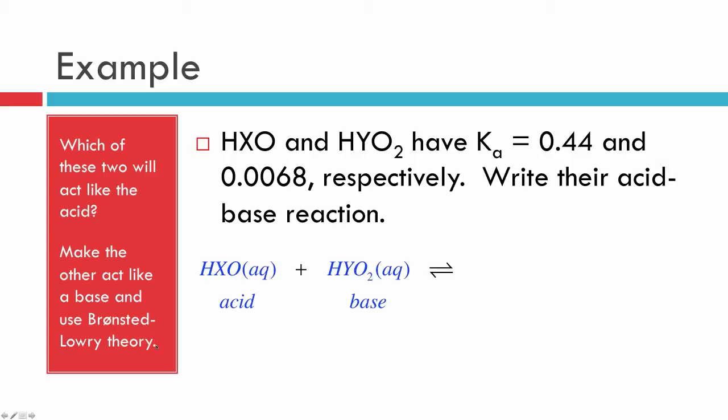We then can use Bronsted-Lowry theory to determine what's going to happen. So a Bronsted-Lowry acid will donate its proton over to the base, and our products then are pretty easy to come by. We have XO minus, because the HXO has lost or donated its proton, to the base, H2YO2. And of course, we could go ahead and then label these with our conjugate acid base by looking at the reverse reactions. Not a bad thing to practice right there.